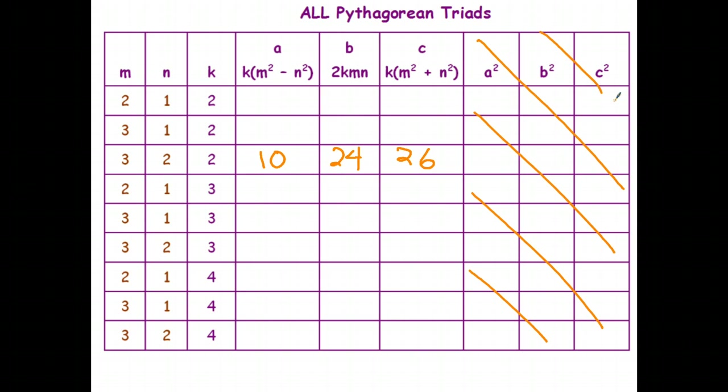And it turns out that you could use, again, m can be any natural number, probably 2 or bigger. n has to be smaller than m. Otherwise, if you subtract, you're going to get a negative number. And then k, I think, can be any value. And that will generate a Pythagorean triad. And with the right choice of m, n, and k, it will generate all the Pythagorean triads if you use all the different possible combinations.